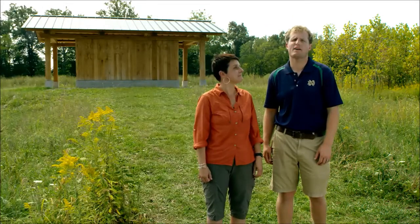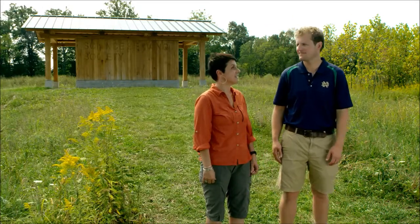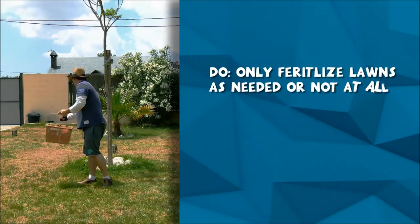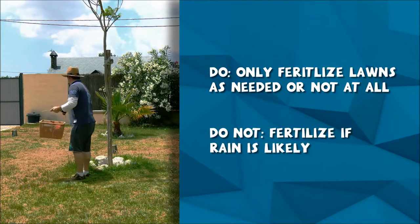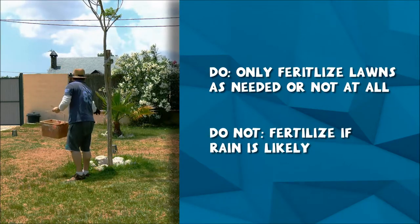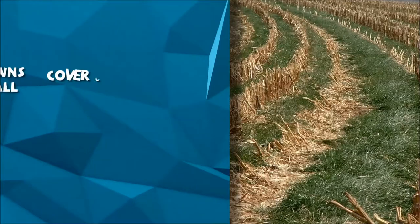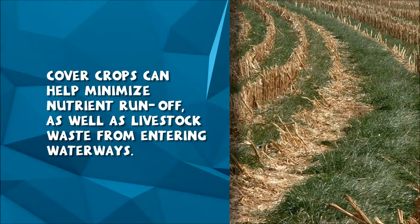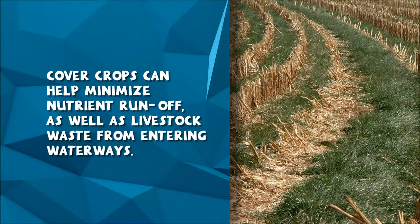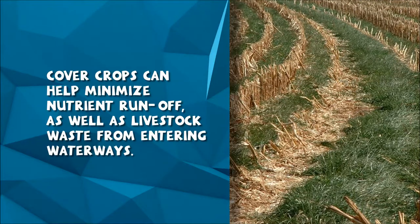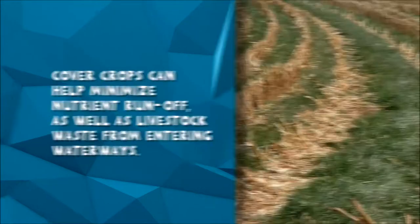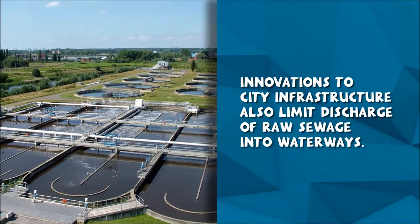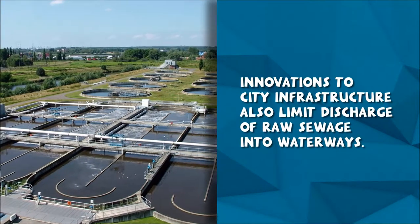Is there anything we can do to decrease the amount of excess nutrients flowing into our streams and lakes? Yes. At home, make sure to only fertilize your lawns as needed, or not at all, and don't fertilize if rain is likely — wait instead to avoid runoff. Farmers are minimizing nutrient runoff from fields by planting cover crops in the winter to keep bare soil covered. They can also keep their livestock and their livestock's waste from entering nearby streams and ditches. Cities are also making innovations to limit the discharge of raw sewage into our waterways by improving their sewer systems and avoiding combined sewer overflows, or CSOs.